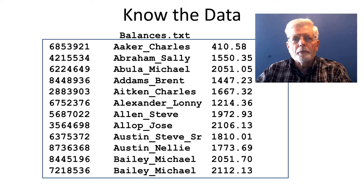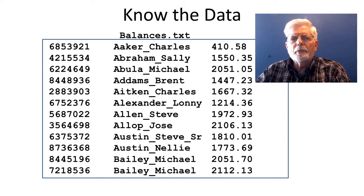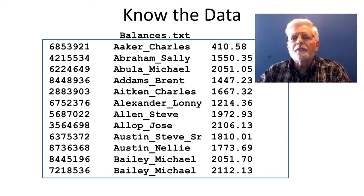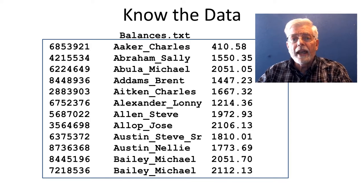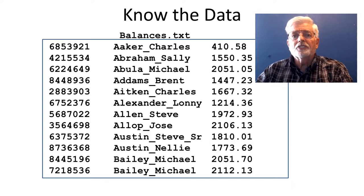To make things easier for the program, I placed an underscore character in the customer names to separate the last name from the first name, so the name in the file is a single string of characters. We could skip the underscore and read last name then first name separately, but this completely falls apart for multi-word last names such as De La Cruz or MacElroy. I'm even providing an example of Austin Steve Sr. with the suffix senior after the name.